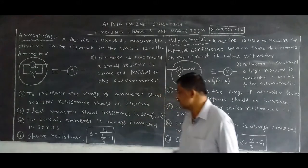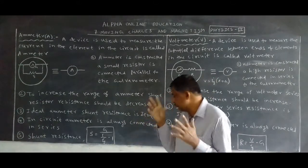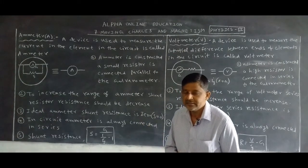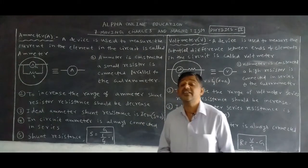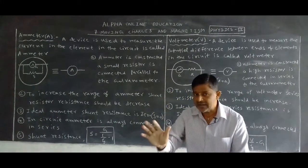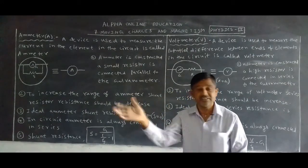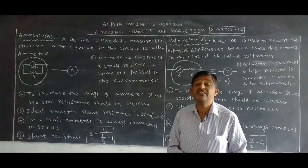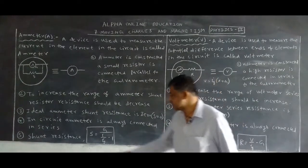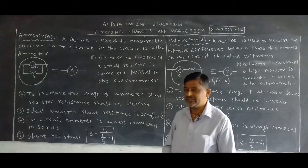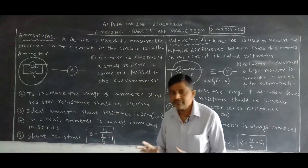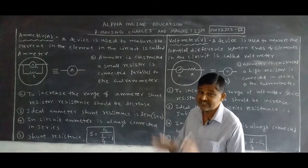Ammeter in the circuit is always connected in series, not in parallel. If it is connected in parallel, it will burn. That is why ammeter is always connected in series only. The shunt resistance formula is: S = G / (I/Ig − 1). This is about ammeter.